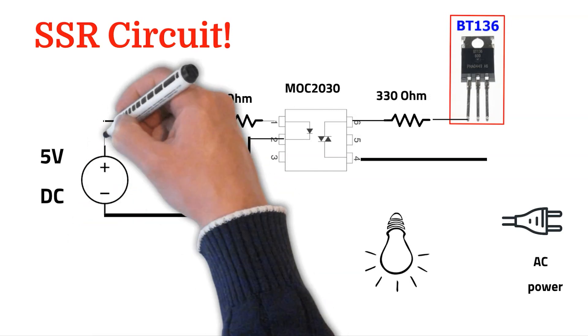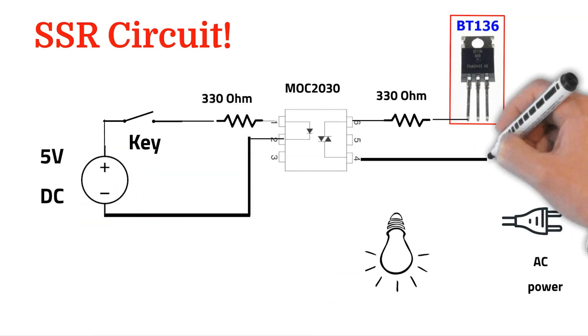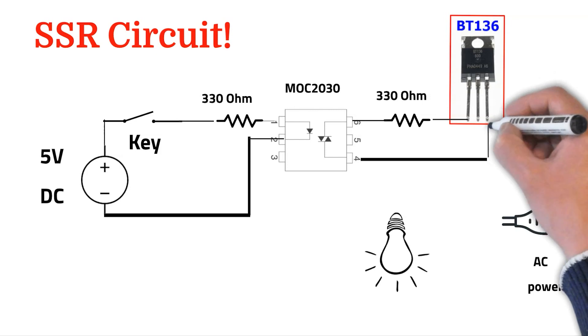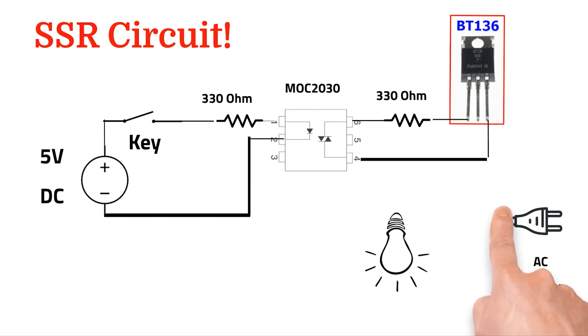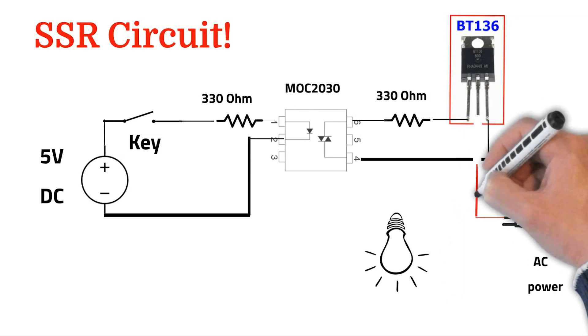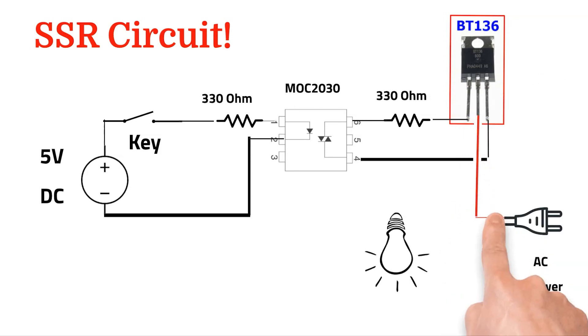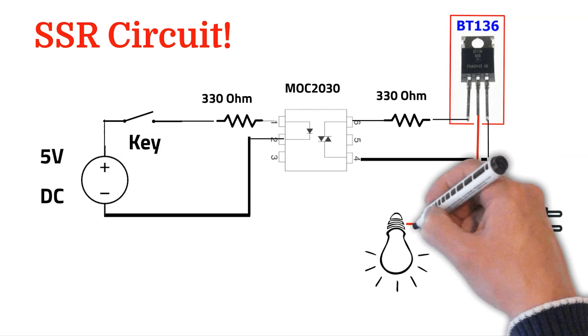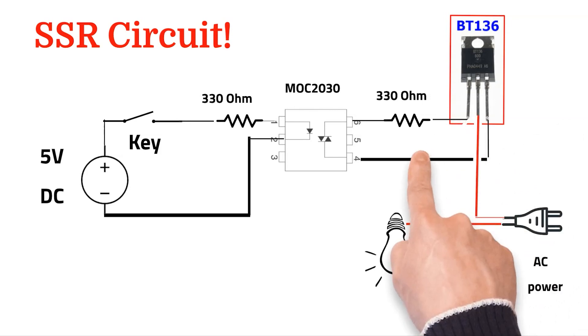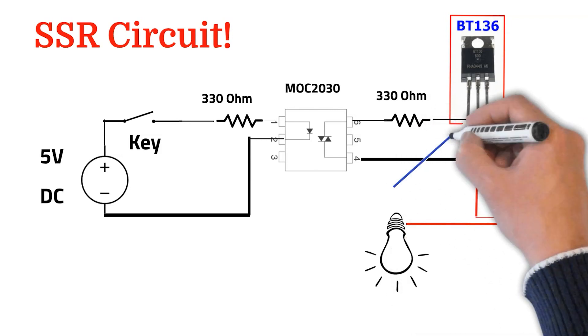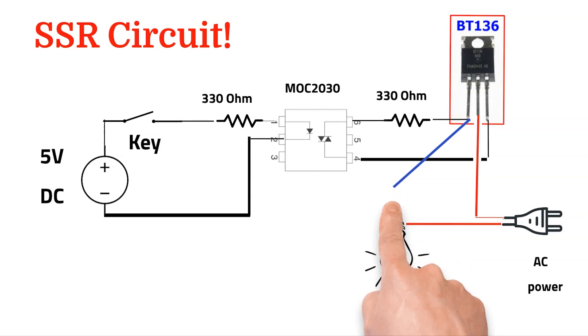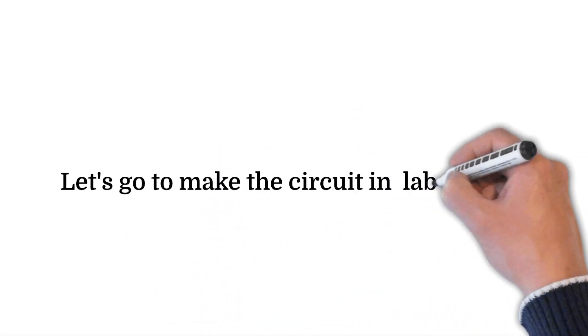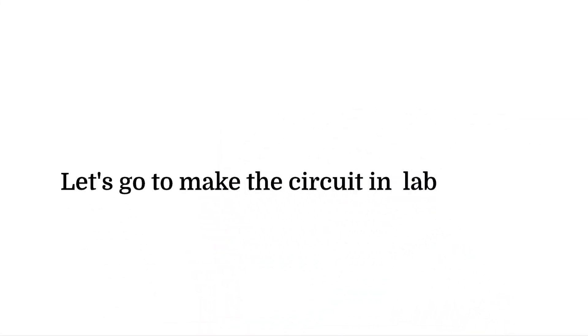The A1 of the triac is connected to the gate of the triac. Then the AC goes to A1. Like a switch, this triac is working. Then from A2 it is connected to the bulb. Let's go make the circuits in the lab.